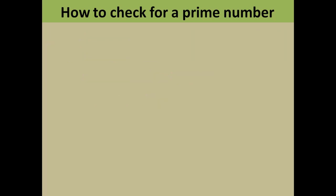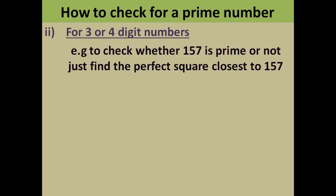For smaller numbers — 3 or 4 digit numbers — you can use this second method. For example, to check whether 157 is a prime number or not, find the perfect square closest to 157. The perfect square closest to 157 is 12 squared, which equals 144, and 13 squared is 169, so you take the smaller number: 12.